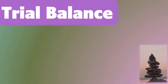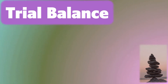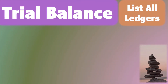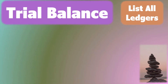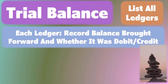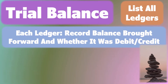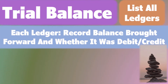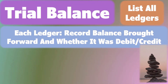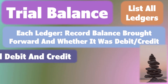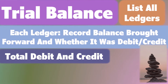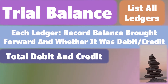Now let's discuss the trial balance. In the trial balance, we list all of the ledgers. For each ledger, we record the value of the balance carried forward and whether it was a debit or a credit. Then we can total the debit column and the credit column.